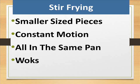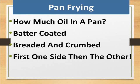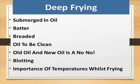Stir frying uses smaller-sized pieces in constant motion, all in the same pan. Pan frying — how much oil in a pan? Food can be batter coated or breaded and crumbed, cooked first on one side then the other. Deep frying involves food submerged in oil — food is breaded, oil must be clean, and mixing old oil with new oil is not recommended. Blotting is important, as is maintaining the correct temperatures whilst frying.